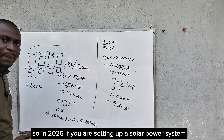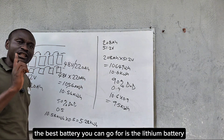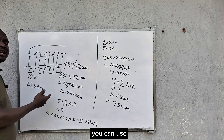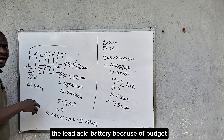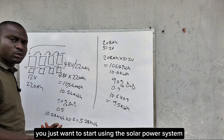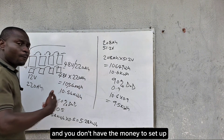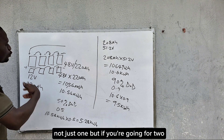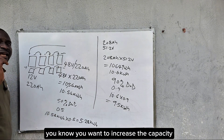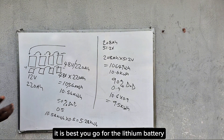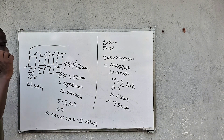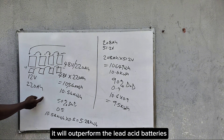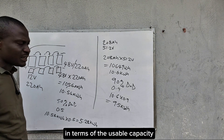So in 2026, if you are setting up a solar power system, the best battery to go for is the lithium battery. Unless you have a small solar system or a limited budget, you can start with a tubular battery — just one. But if you are going for two or more to increase capacity, it is best to go for the lithium battery if you have the finance.